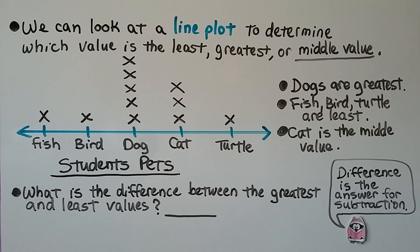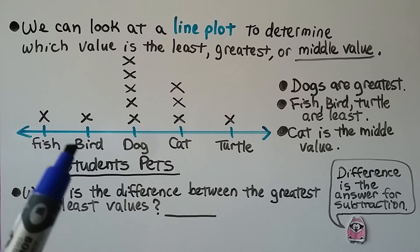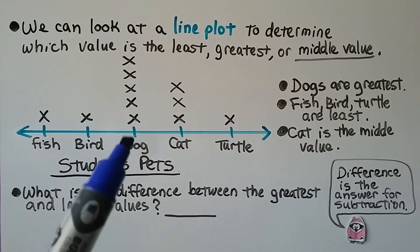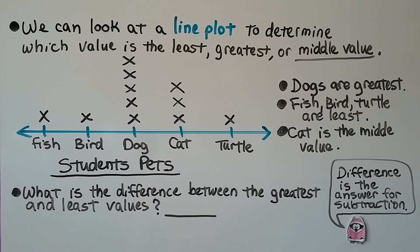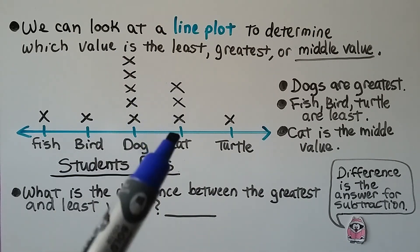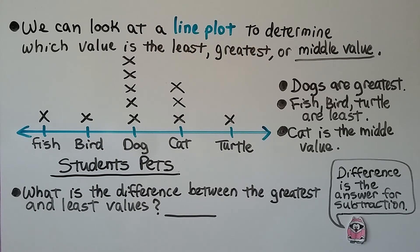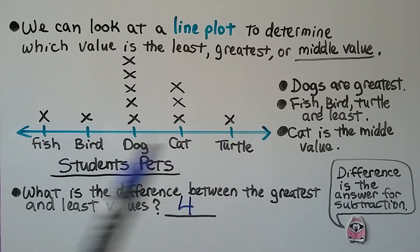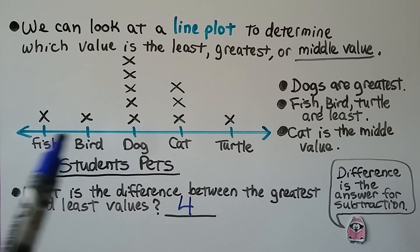We can look at a line plot to determine which value is the least, greatest, or middle value. Here's students' pets: one person has a fish, another has a bird, and 5 students said they have a dog, 3 have a cat, and 1 has a turtle. The least would be fish, bird, or turtle — all with 1. Dogs are the greatest with 5. Cats are the middle amount — 3 is in between 1 and 5, so 3 is the middle value. The difference between greatest and least is 5 minus 1, which is 4. Even though there are multiple pets with a count of 1, they're all still the least value — we say 5 minus 1.